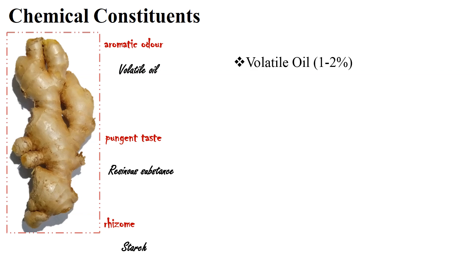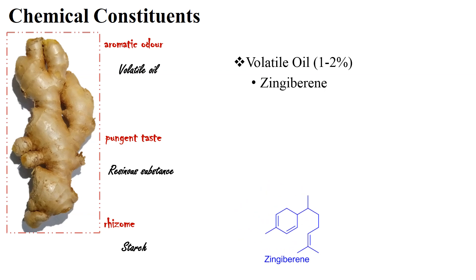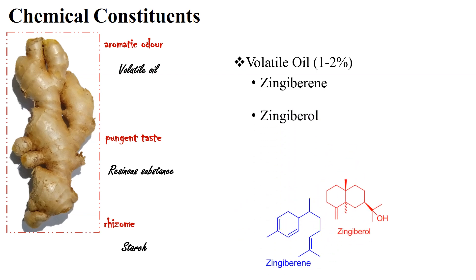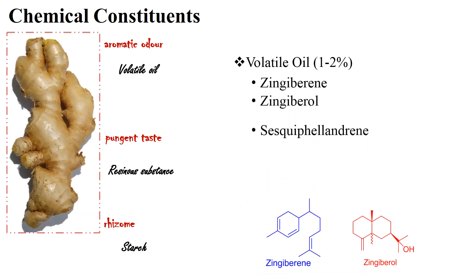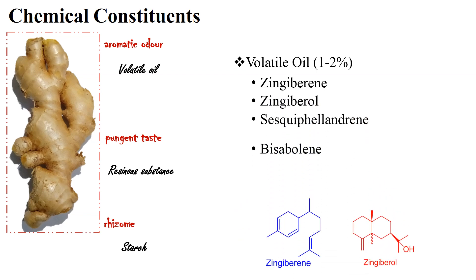Coming to the volatile oil: the volatile oil content of ginger is 1 to 2%. A number of constituents have been isolated from the volatile oil of ginger. Some of the important components are: Zingiberene, Zingiberene, Cis-Cofilindrine, and Bisabolone. Resinous substances of ginger.